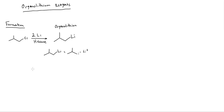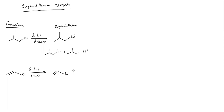You know, I can take pretty much anything and turn it into an organolithium. So let's take a look at this vinyl chloride here. We can also turn this into an organolithium — I'll put this in diethyl ether. Again, all that's going to happen is I just replace the chlorine with a lithium. That's all we're doing.